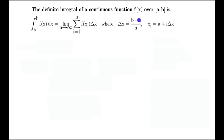Delta X is what we had before, B minus A over n, and X_i is A plus i times delta X. Let's work out an example to compute one of these definite integrals. Let's compute the integral from 0 to 1 of X squared DX.